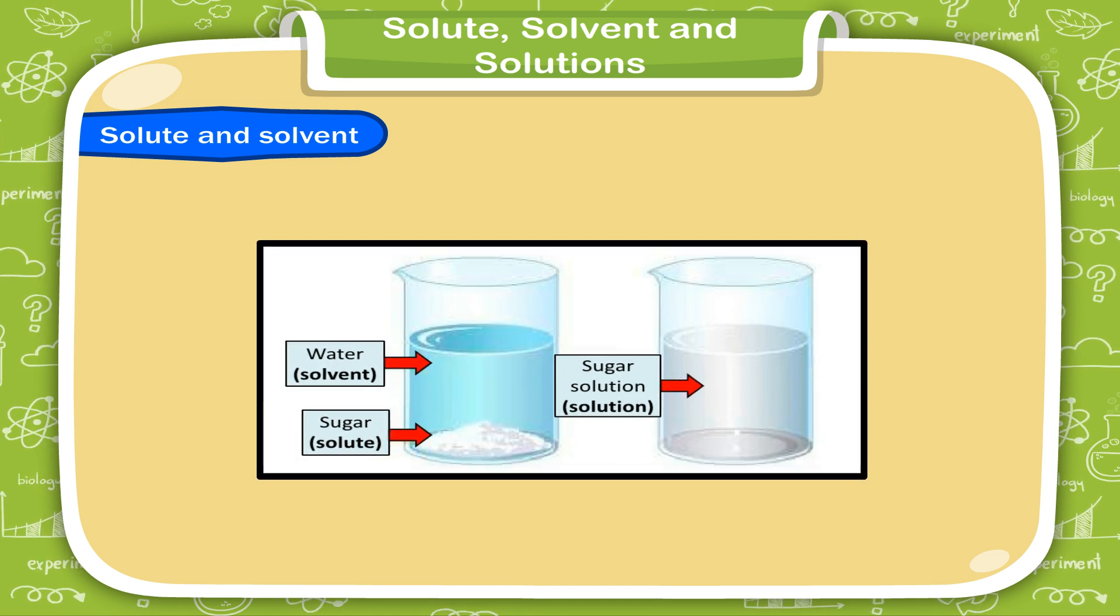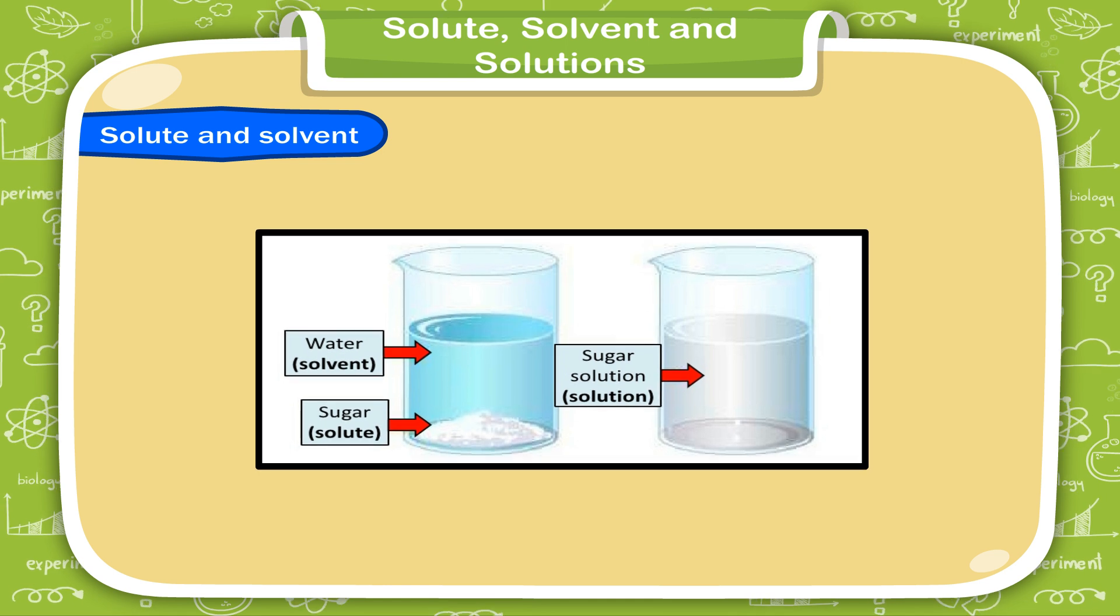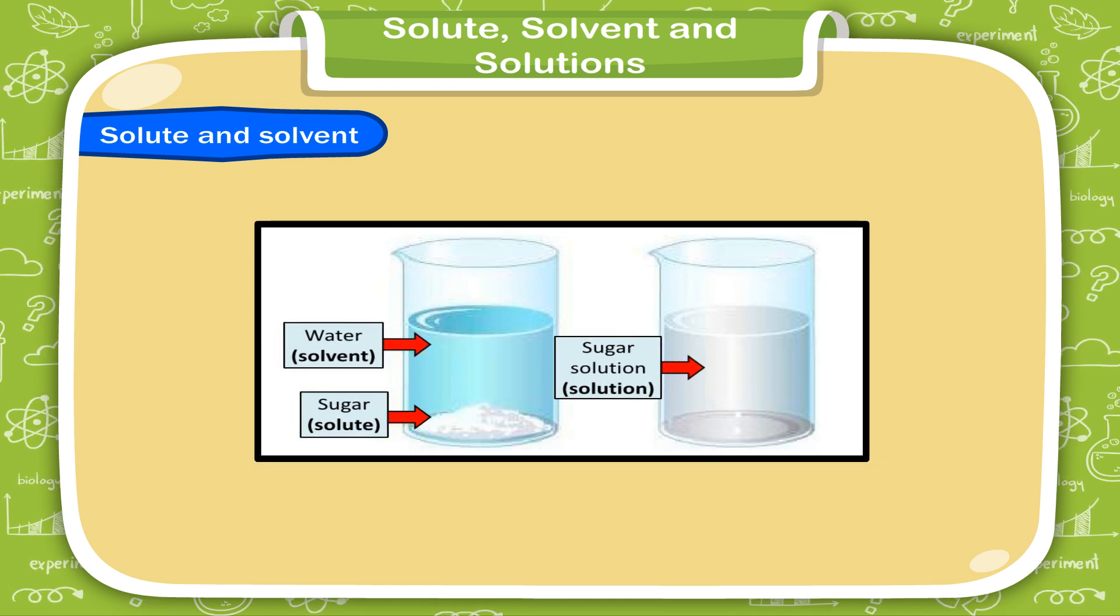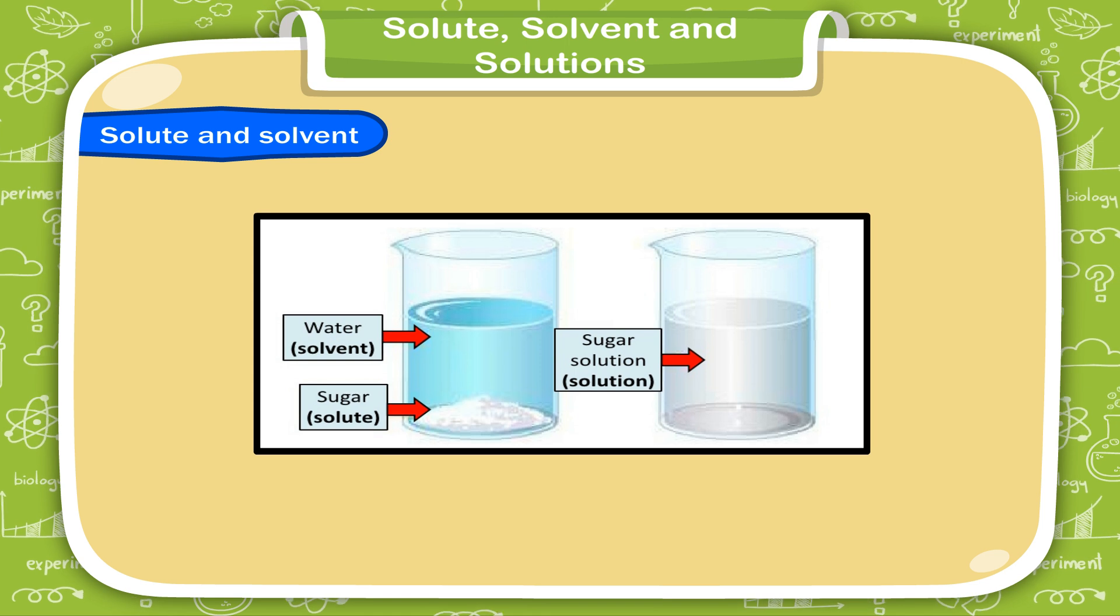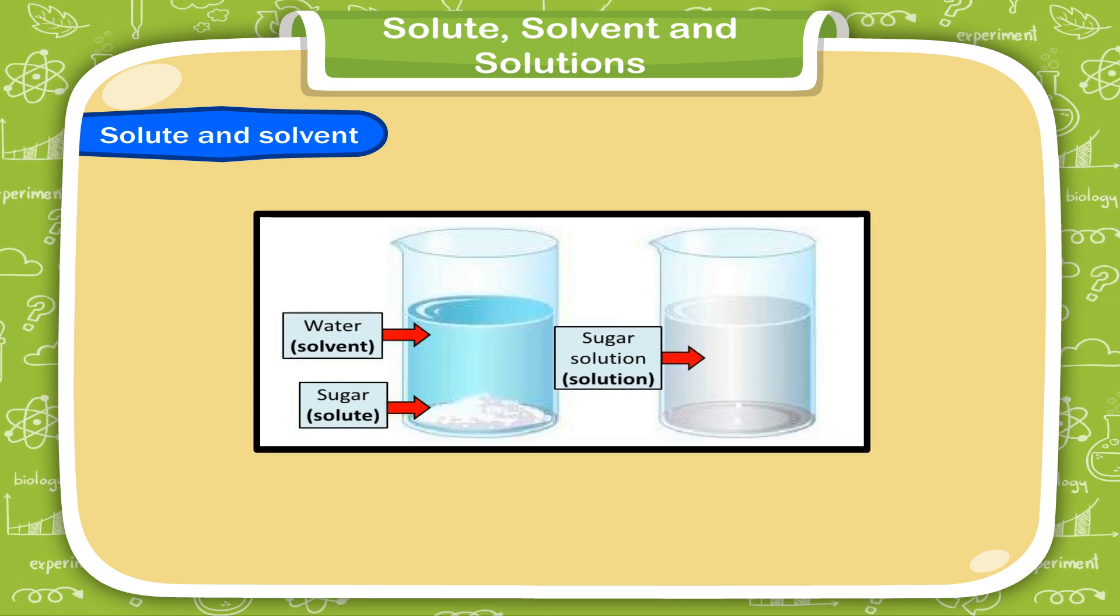The substance which is soluble in other substance is called the solute. Here, sugar is the solute. The substance in which a solute is dissolved is called the solvent. Here, water is the solvent.